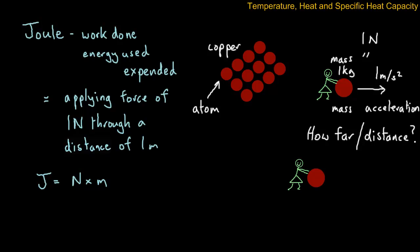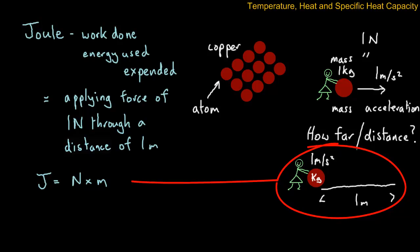But there's still a question about how far this atom will be traveling — what is the distance? Here we have Frederica again with the one-kilogram mass, and she's going to accelerate it by one meter per second squared for a distance of one meter. As you know, accelerating one kilogram by one meter per second squared is one Newton. So one Newton applied over a distance of one meter is what we call a joule.